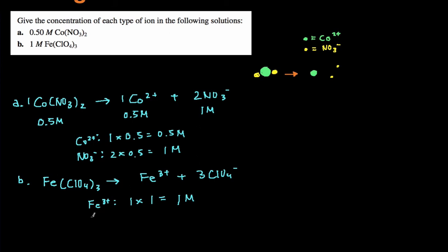And then for the perchlorate, ClO4-, let's see how many perchlorates we have. We look at the subscript. There's a 3 right here, and then we multiply it by the original concentration of the solution, which is 1, and then that's going to give us 3 molar perchlorate ion. And that's it.